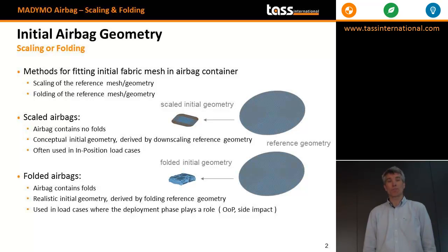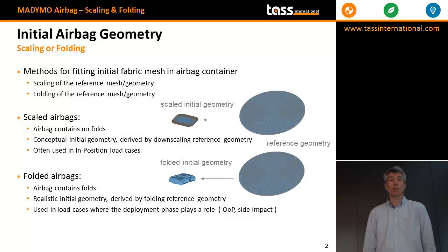Folding is more complicated. It already starts when creating your reference mesh, because you have to take into account where you would like to have your folds. Obviously it's much more accurate, but also more time consuming, because you have to define the contact. This is typically used for out-of-position load cases or maybe side impact, because there the time to deployment is very small compared to a normal frontal case.